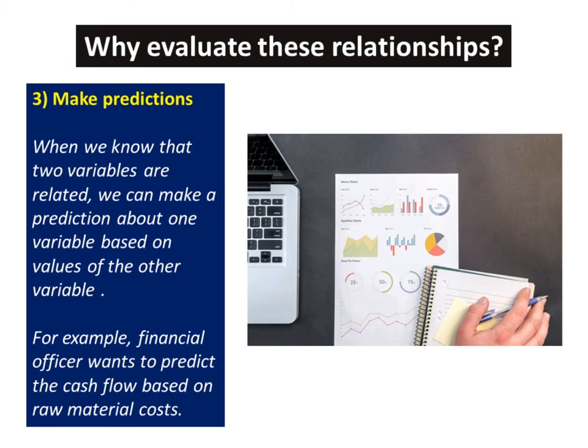Three, make predictions. When we know that two variables are related, we can make a prediction about one variable based on values of the other variable. For example, a financial officer wants to predict the cash flow based on raw material costs.